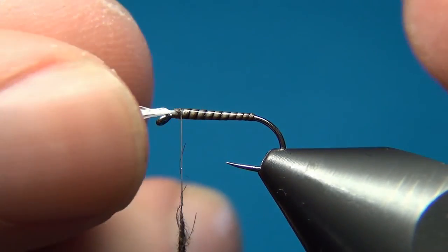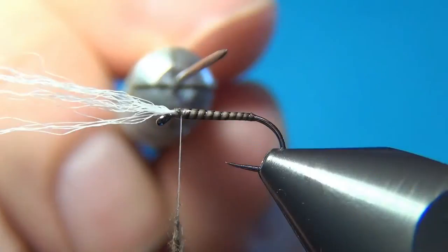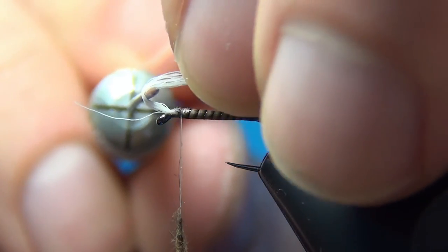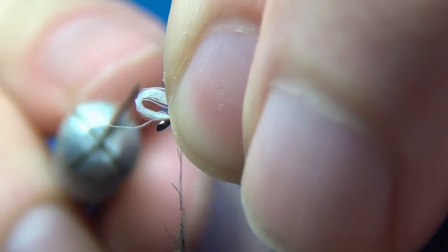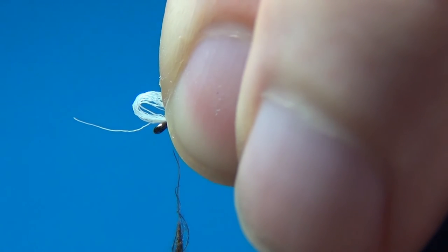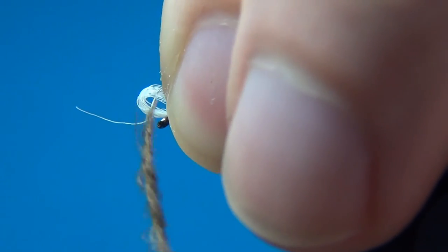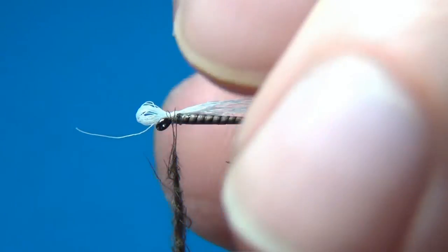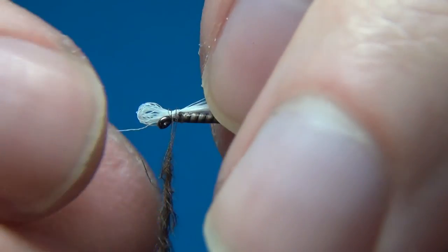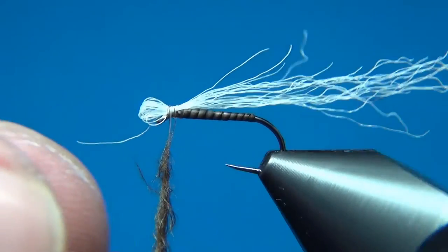Then in order to get some gills on this fly and also this will help the fly float a little better. With a dubbing needle we will do a loop here with these fibers. And this loop here will also trap some air and will help the fly float. And then just a few turns here. Make sure that your loop is the right size. If not you can just pull on it a little.